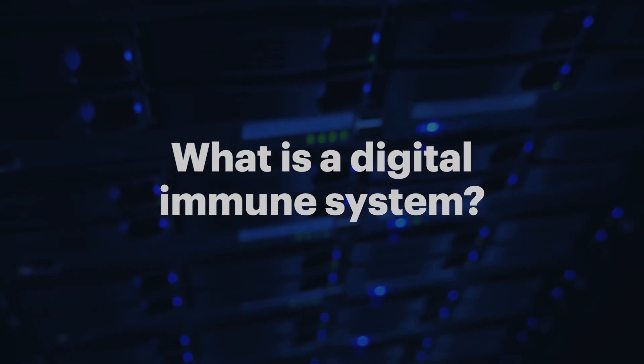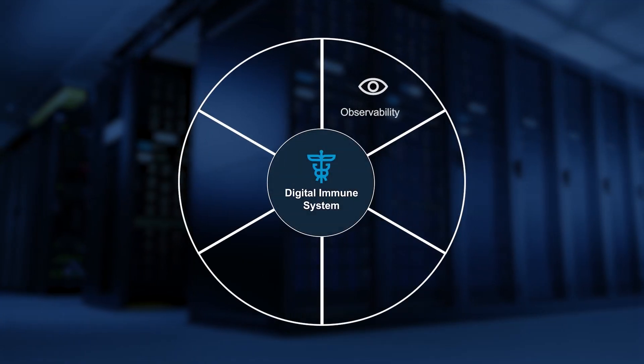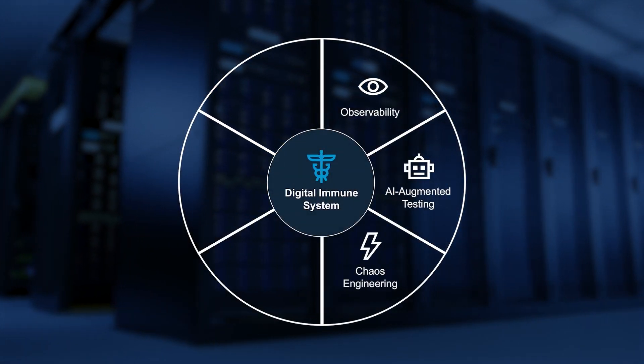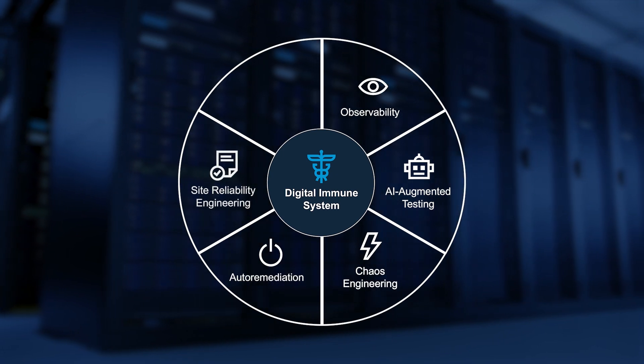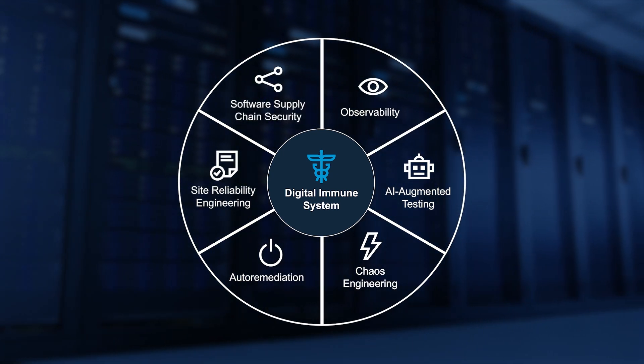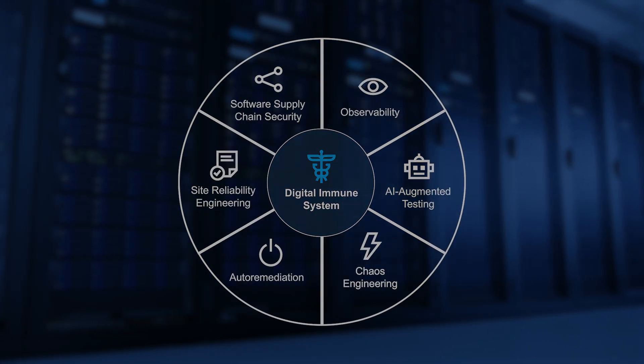The digital immune system combines practices and technologies from observability, AI augmented testing, chaos engineering, auto-remediation, site reliability engineering, and software supply chain security to increase the resilience of products, services, and systems against failure of any kind, such as the effects of software bugs or security issues.